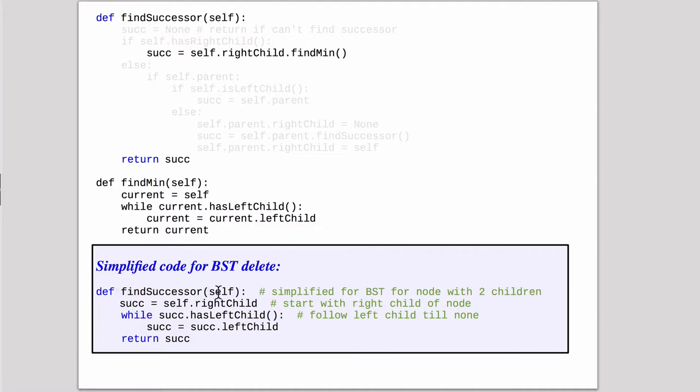So find successor for self. We get the right child and while we can go left we follow that slope down until this is false. So every time we loop we're going to replace the successor to the next child we found. So when we're all done this will return the successor.